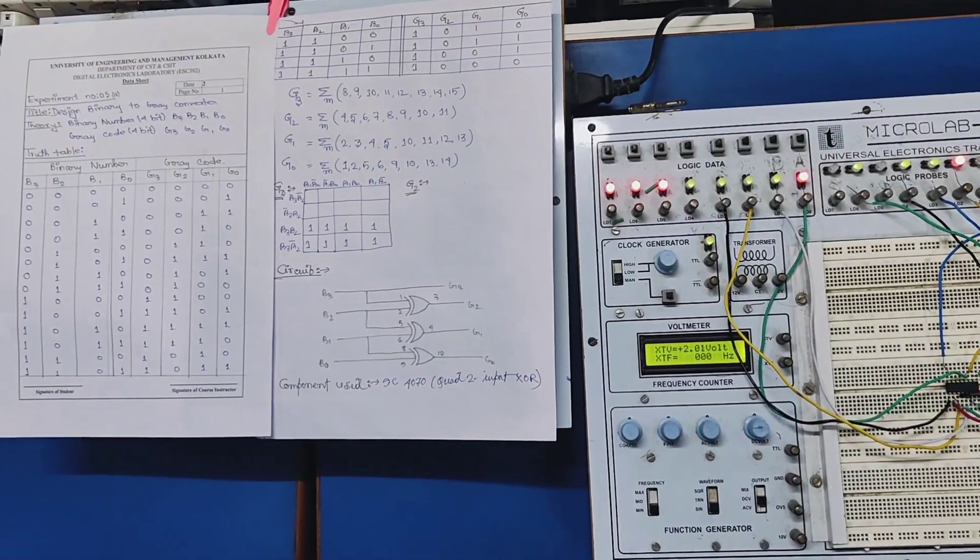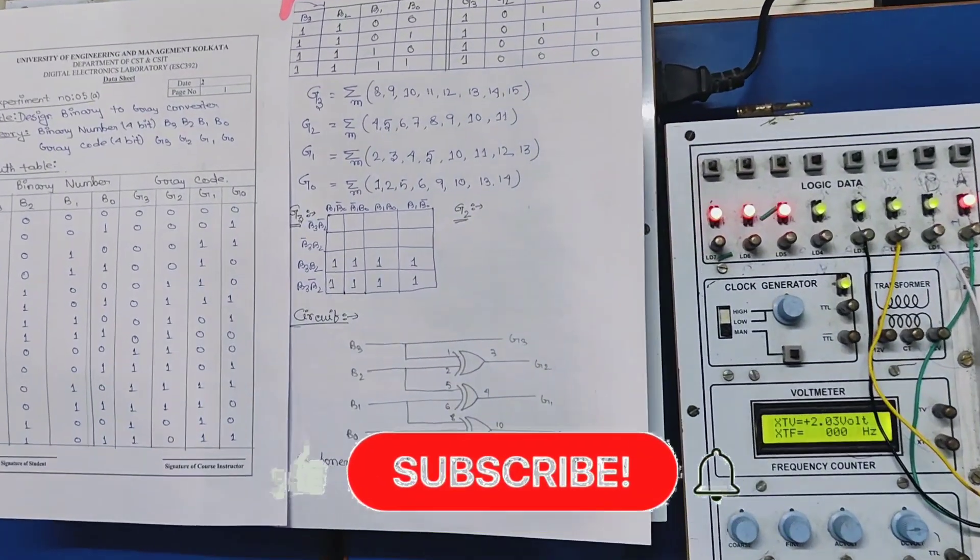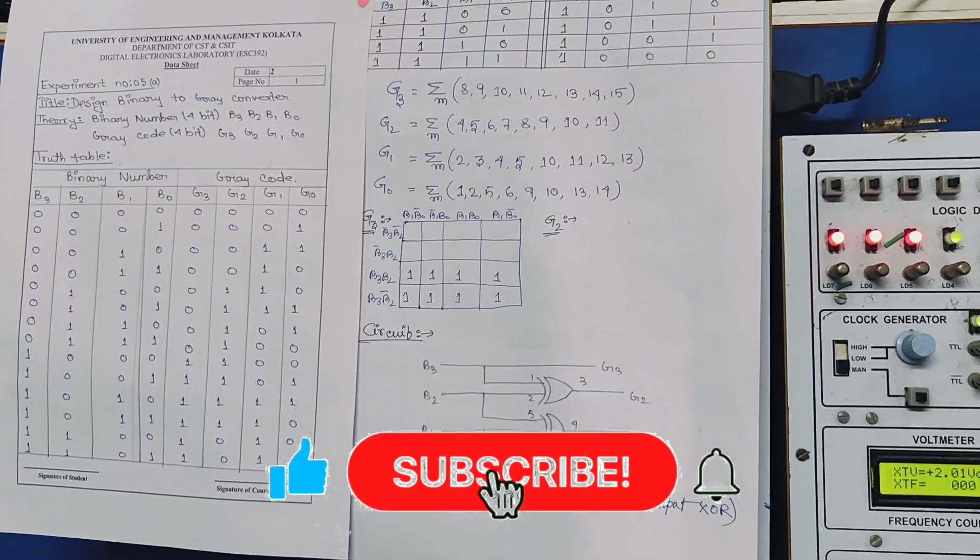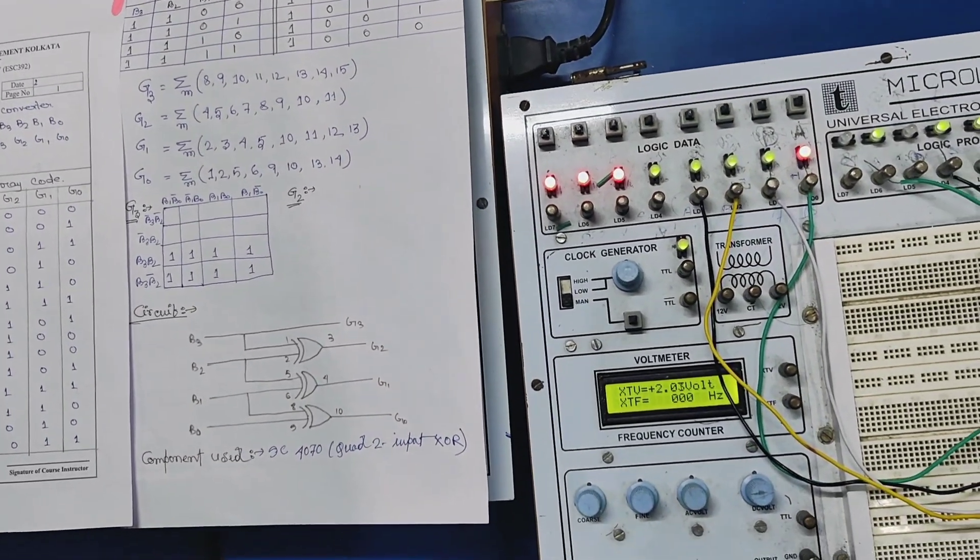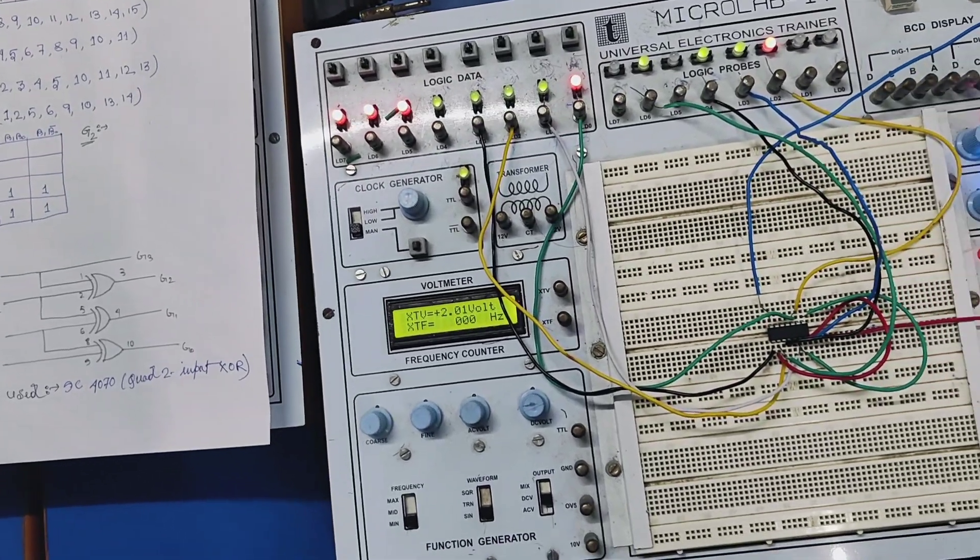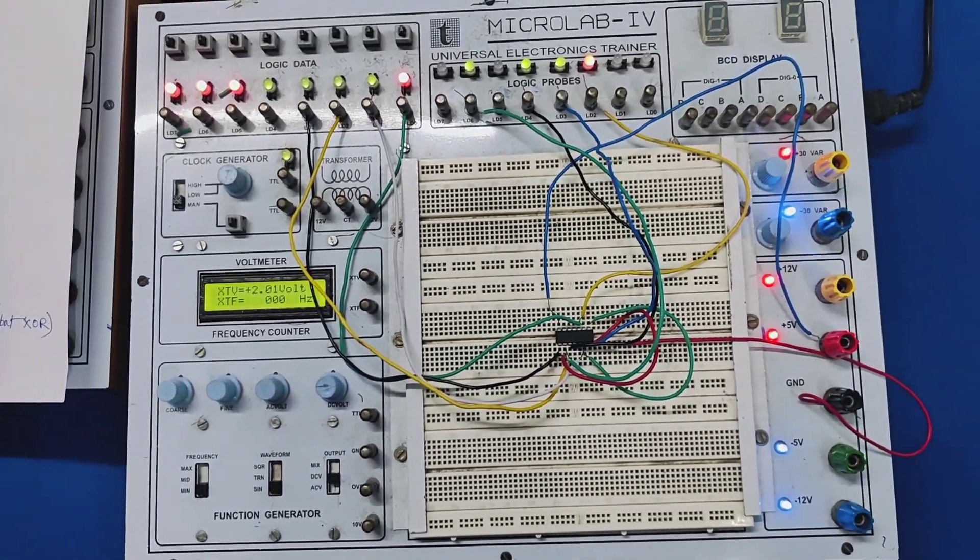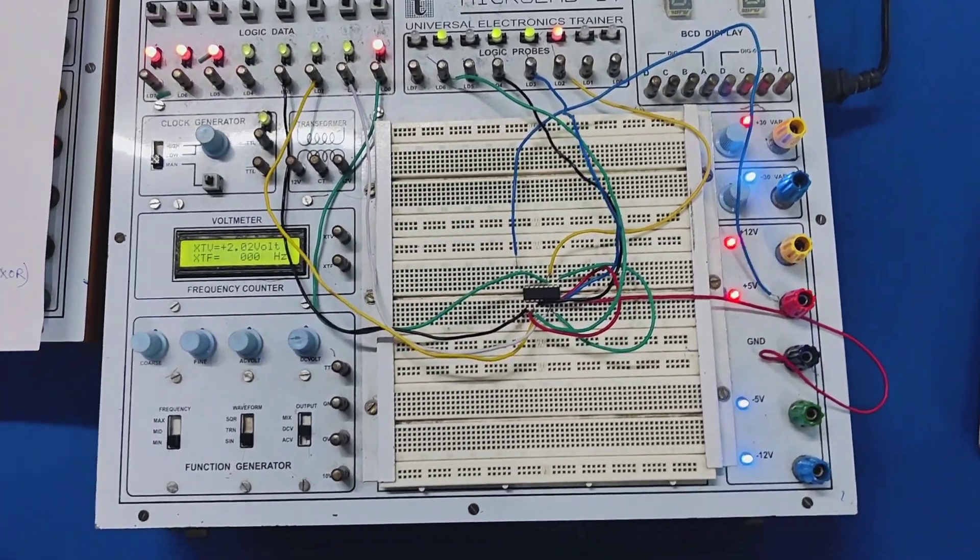Here we are performing the experiment of conversion where we are converting 4-bit binary numbers which is b3, b2, b1, and b0 to 4-bit Gray code which are g3, g2, g1, and g0.